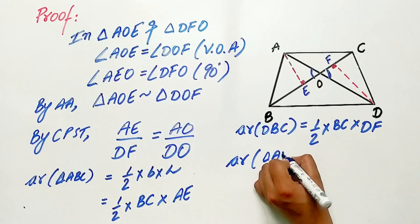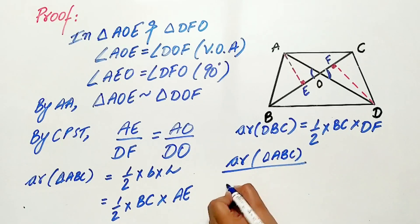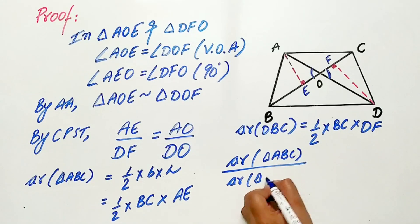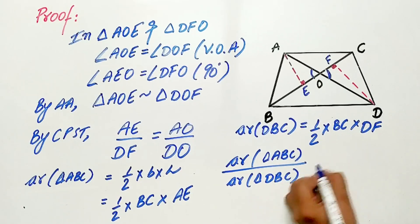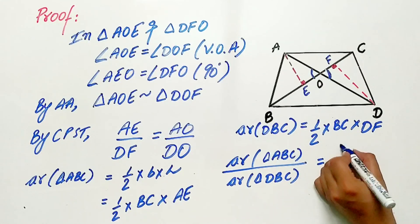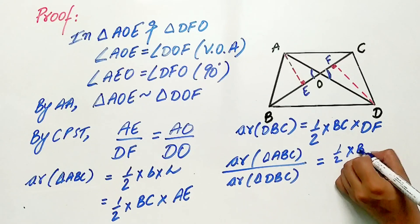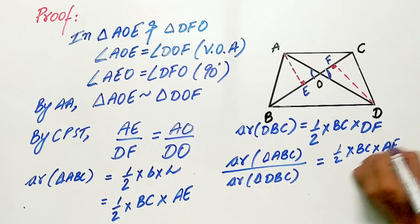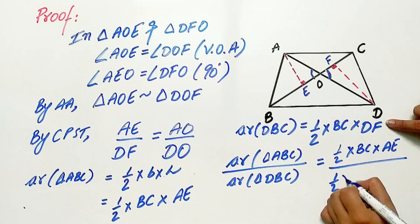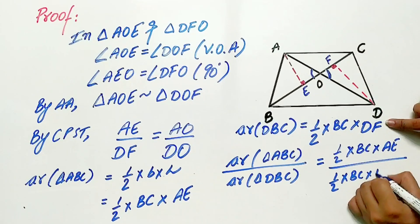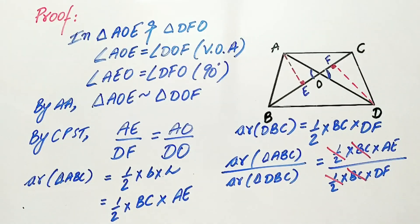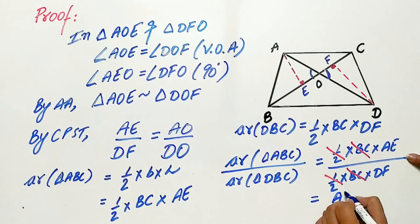Let's find the ratio: area of triangle ABC by area of triangle DBC is equal to AE by DF.